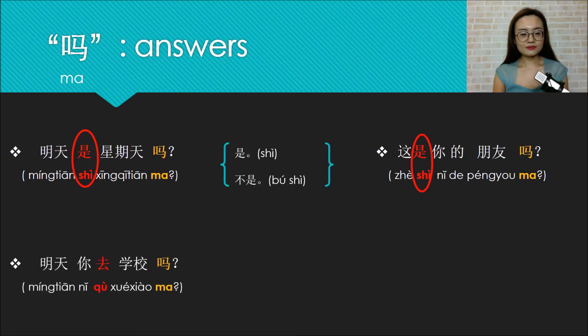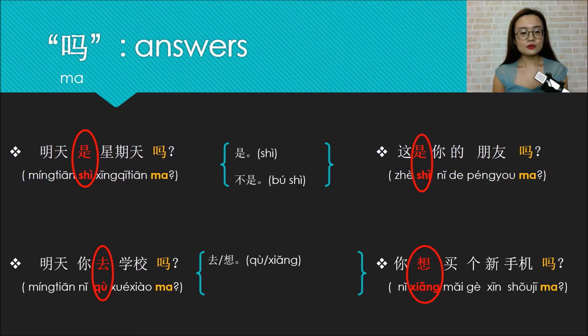Okay, two more examples. Mingtian ni qu xuexiao ma? Are you going to school tomorrow? Ni xiang mai ge xin shouji ma? Do you want to buy a new phone? The verbs in these two sentences are qu and xiang. So when you answer this kind of sentence, you can just say qu (I'm going to) or xiang (I want to).